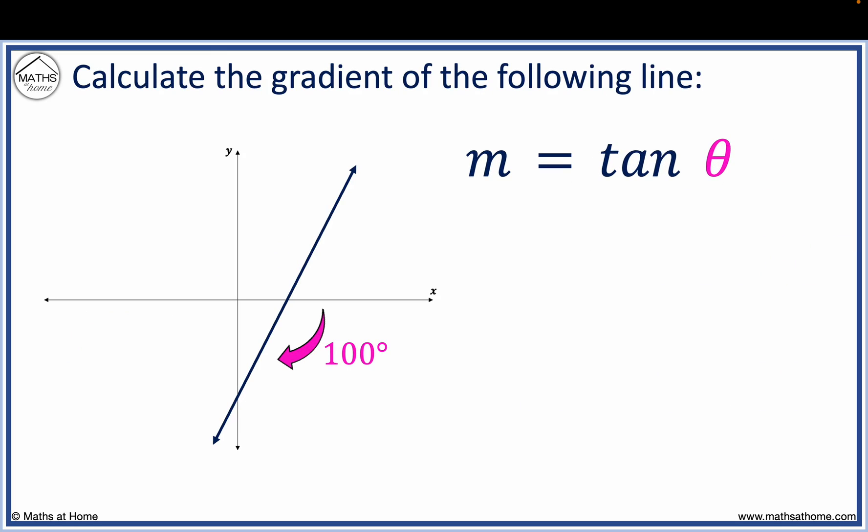Again in this example, we need to find the angle counterclockwise from the x-axis shown here. Our angle of 100 degrees is in the opposite direction to this, so we can enter theta as minus 100 degrees. Evaluating tan of minus 100, we obtain a gradient of 5.67.